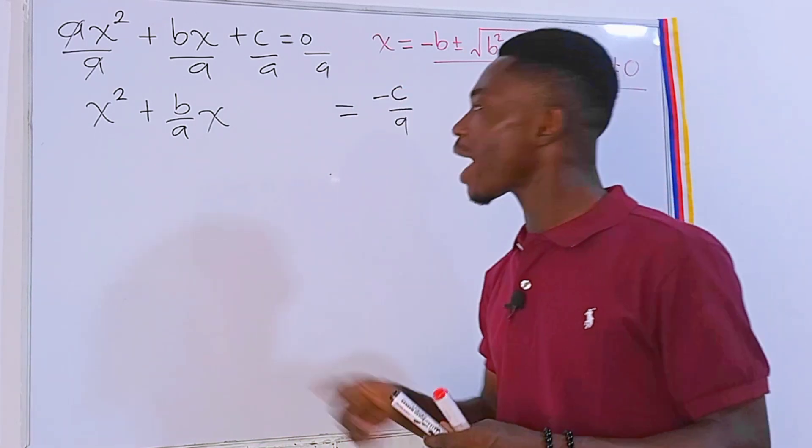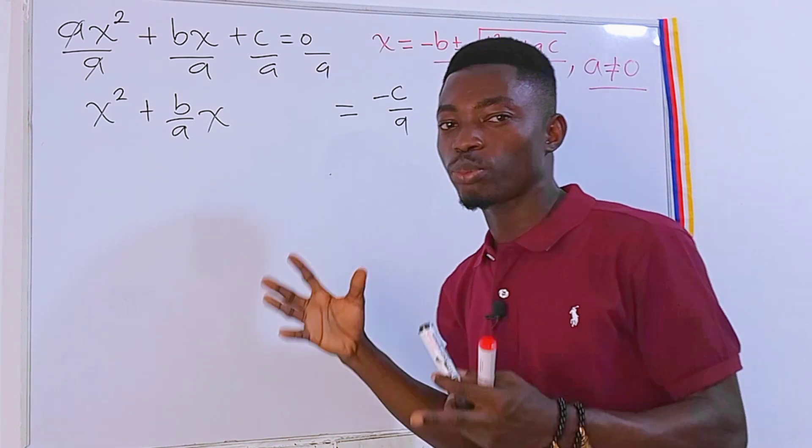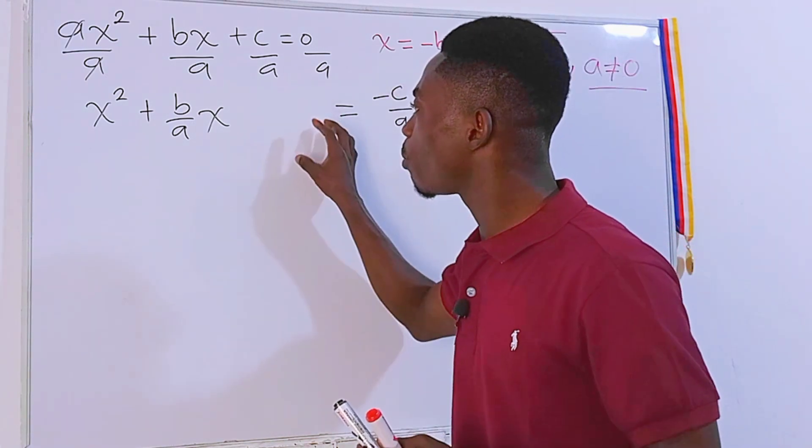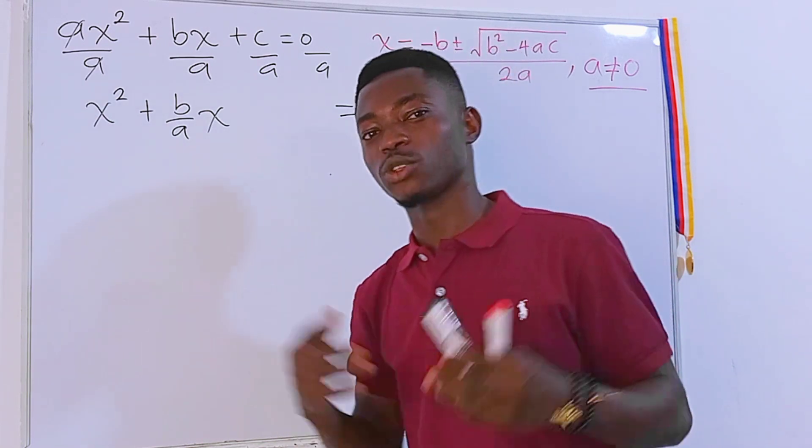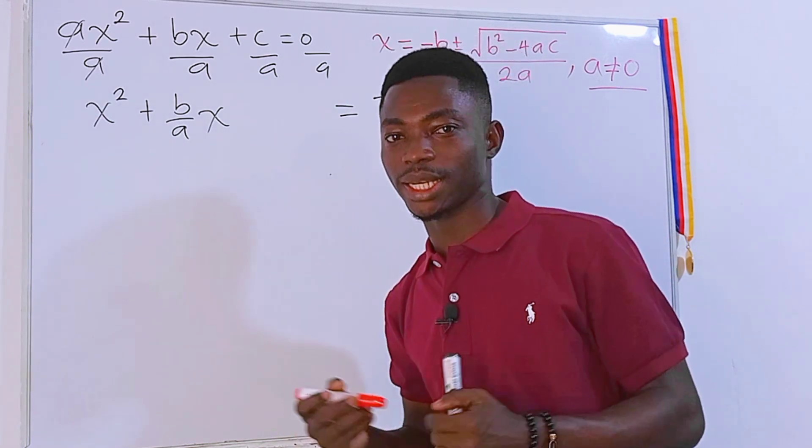And the reason why I left this huge space is that we are going to put a magic number that will make the goal of this one a perfect square. And what is this magic number? Check this out.